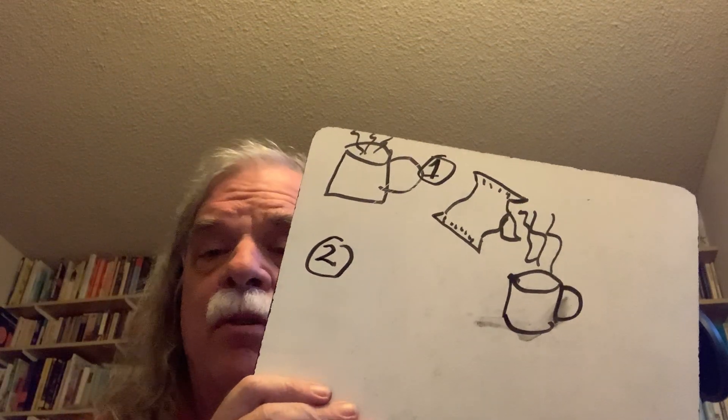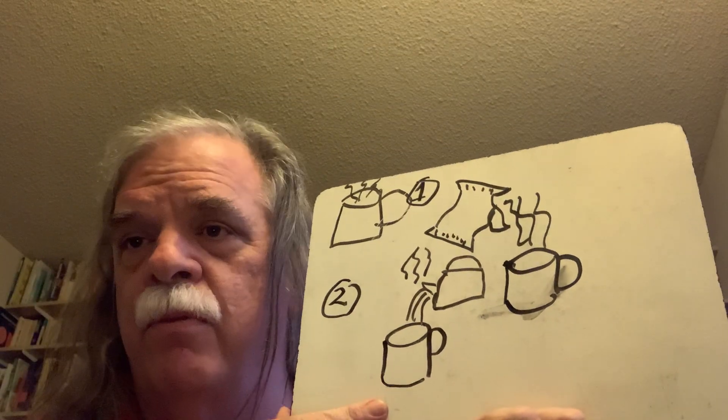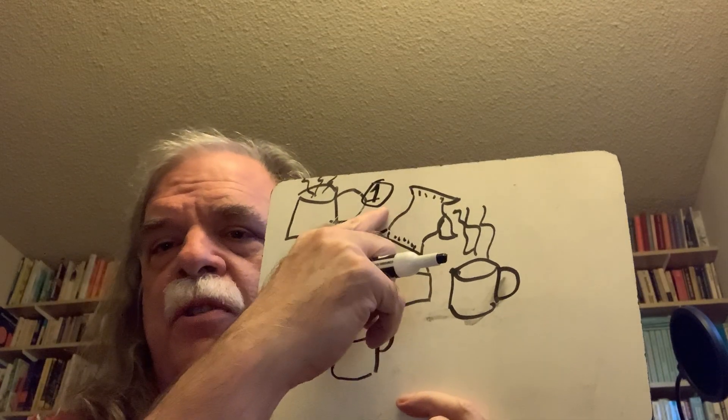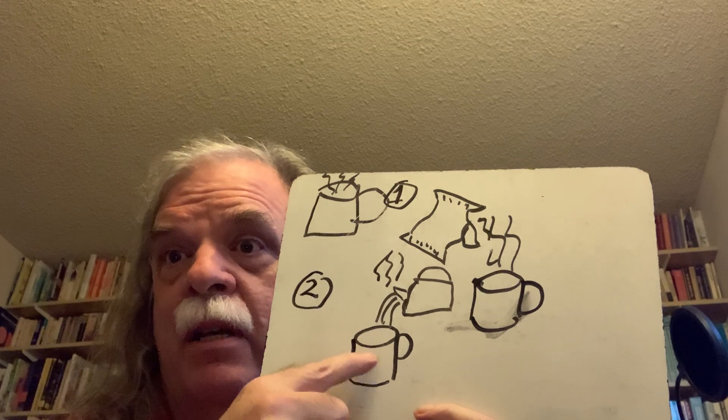Okay, number two — what are we going to do for number two? We're going to pour hot water in. And if you were going to do this, you might want an adult because you're going to have to use a stove or something like that. So first I'm going to pour the cocoa into the cup, and second I'm going to pour the hot water on top of the cocoa.